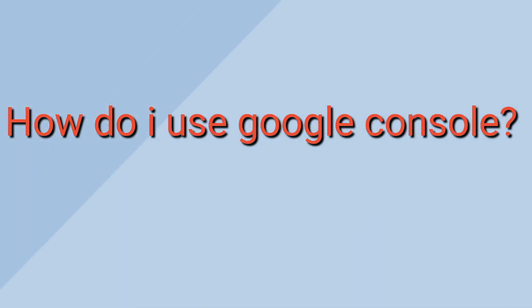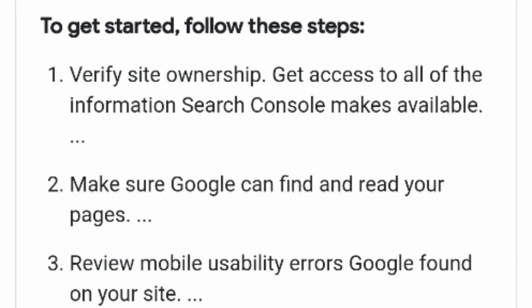The third question is: how do I use Google Console? There are three main steps. First, verifying site ownership — verifying site ownership gets you access to all the information that Search Console makes available. Second, make sure Google can find and read your pages. Third, review mobile usability errors that Google found on your site.